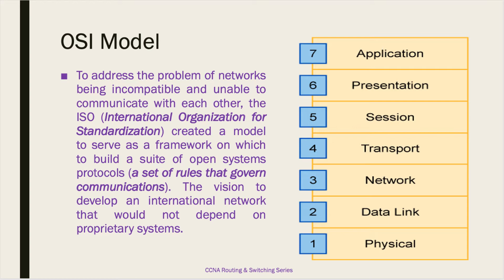The OSI reference model provides a means of describing how data needs to be transmitted over a network. To address this, the ISO divided the whole thing into multiple layers — and the separation of networking functions is called layering. In the OSI model there are seven layers: at the bottom is the physical layer (layer 1), followed by data link (layer 2), network (layer 3), transport (layer 4), session (layer 5), presentation (layer 6), and application (layer 7). Each layer is responsible for particular work.